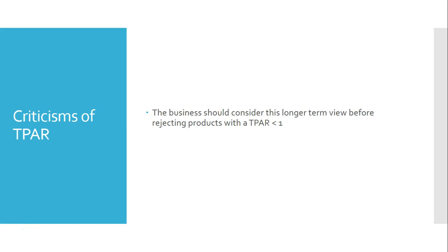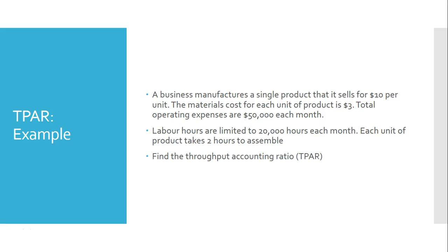A product might show a low TPAR, but in the long term, if it's giving a TPAR less than one, that's because operating costs have been treated as fixed. In the long term, those costs will become variable — or won't exist as fixed costs. So the denominator will be smaller. You should be careful when using TPAR: it is only valid as a short-term tool.